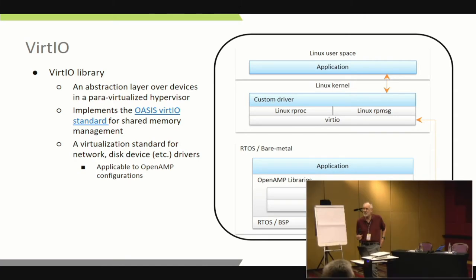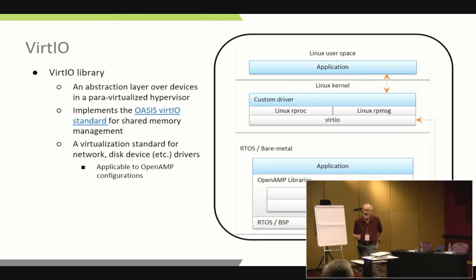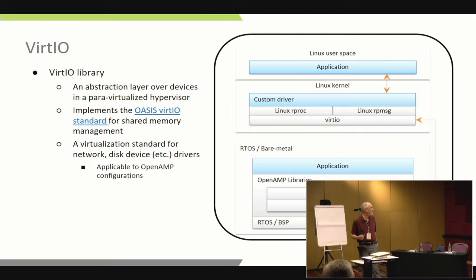VirtIO is an abstraction layer that originally was designed to allow Linux devices to efficiently access hypervisor resources, but the concept is just extremely useful for providing a common device hardware abstraction layer for a whole variety of underlying implementations. It's a standard, so if you implement a VirtIO device that Windows recognizes, it might even be recognized by Linux without any modification.